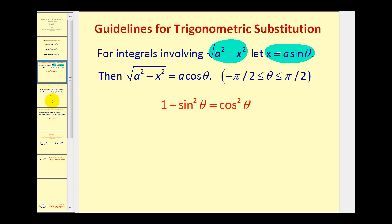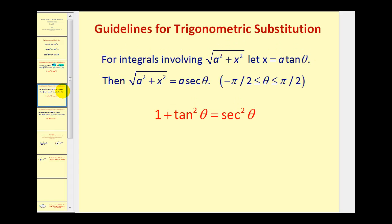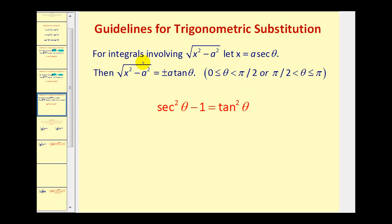Then in part two, we showed how to integrate when we had something in the form of the square root of a squared plus x squared, when we let x equal a tangent theta. And in this video, we'll take a look at integrals involving the square root of x squared minus a squared, where we let x equal a secant theta.